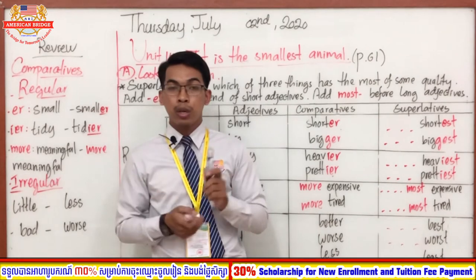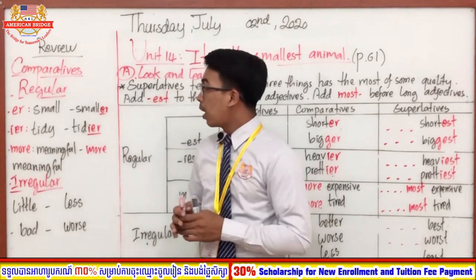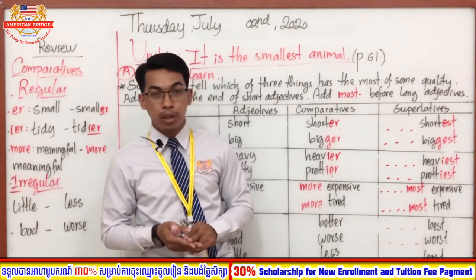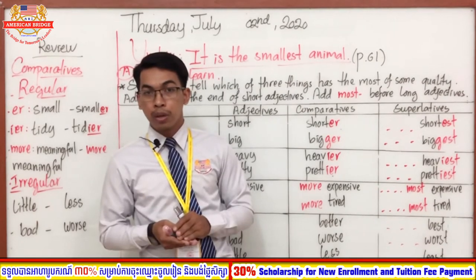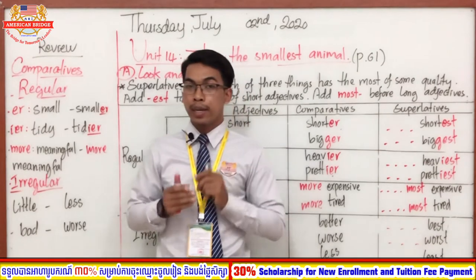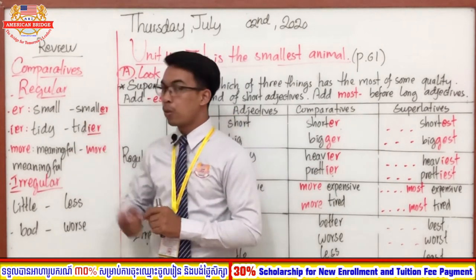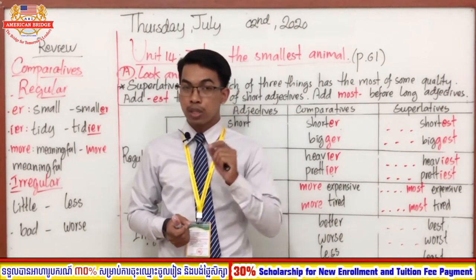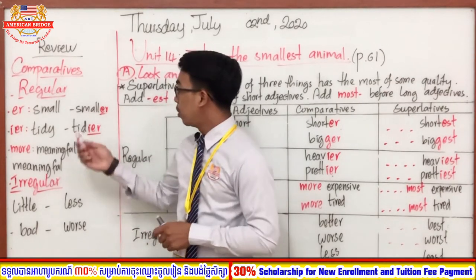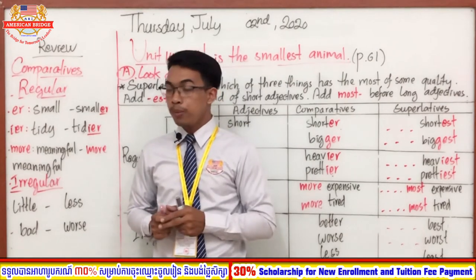We compare two things; if we have only one thing, we cannot compare. So we need at least two things. This is the way to change the adjective to comparatives. We have two forms: regular and irregular. For regular, we have three types. The first is by adding -er — for adjectives that have only one syllable, the short adjective. Like the word 'small' — we add -er and it becomes 'smaller'.